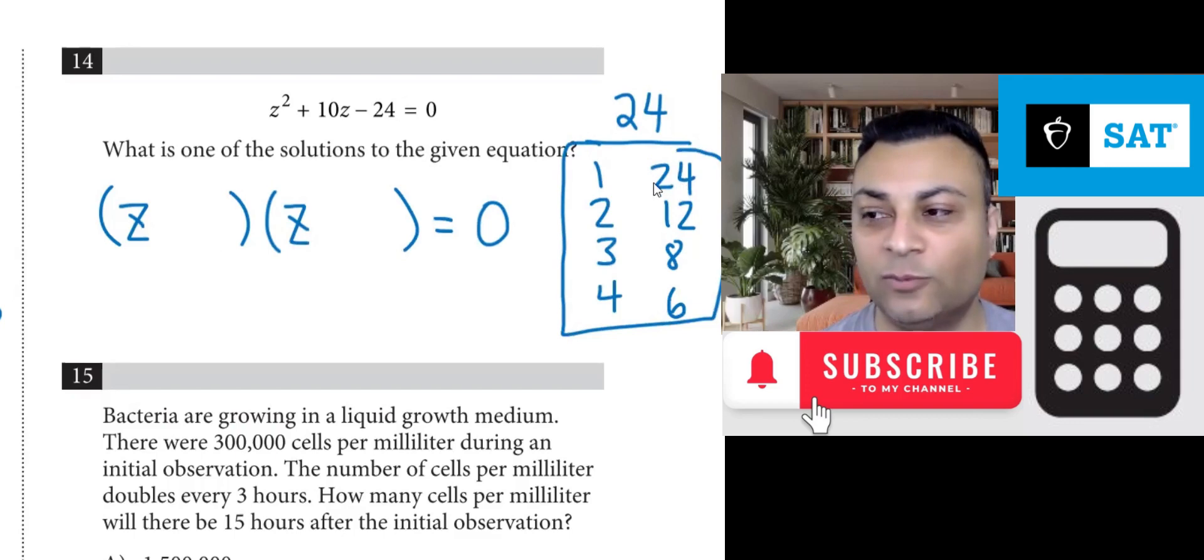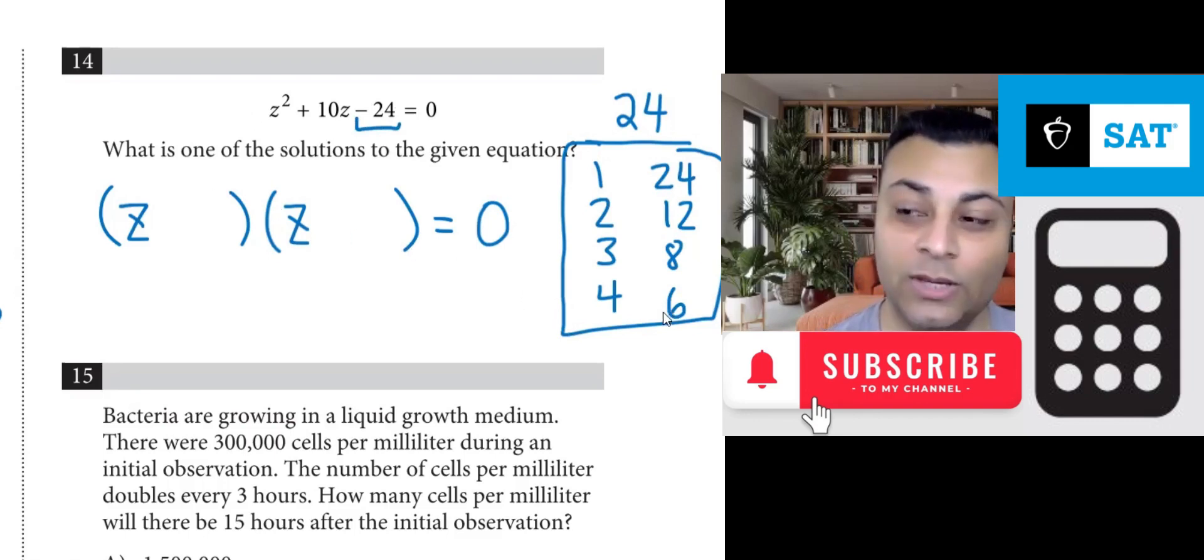Now, we have to make one of them positive and one of them negative to get negative 24. Also, we have to make 10z. You might think 4 and 6 can make 10. Well, the problem with 4 and 6 is we can make 10 if I'm allowed to use both positive. But I can't use both positive because I will never get negative 24.